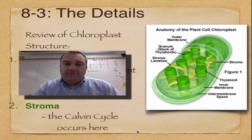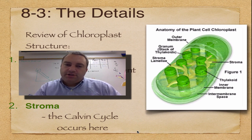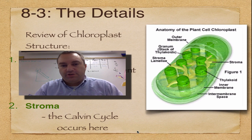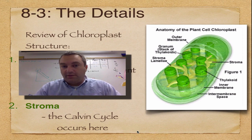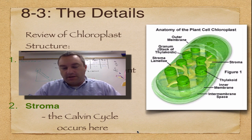Alright, welcome to part five of our series on photosynthesis. This episode is just going to cover this slide because we're going to go over the structure of a chloroplast. Chloroplasts are really important because they are the plant organelle where photosynthesis is going to occur.